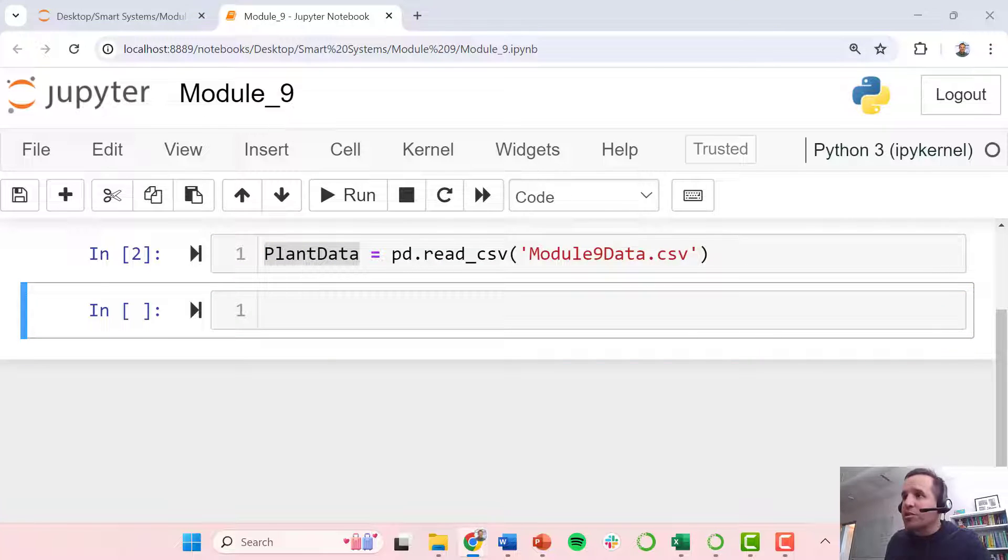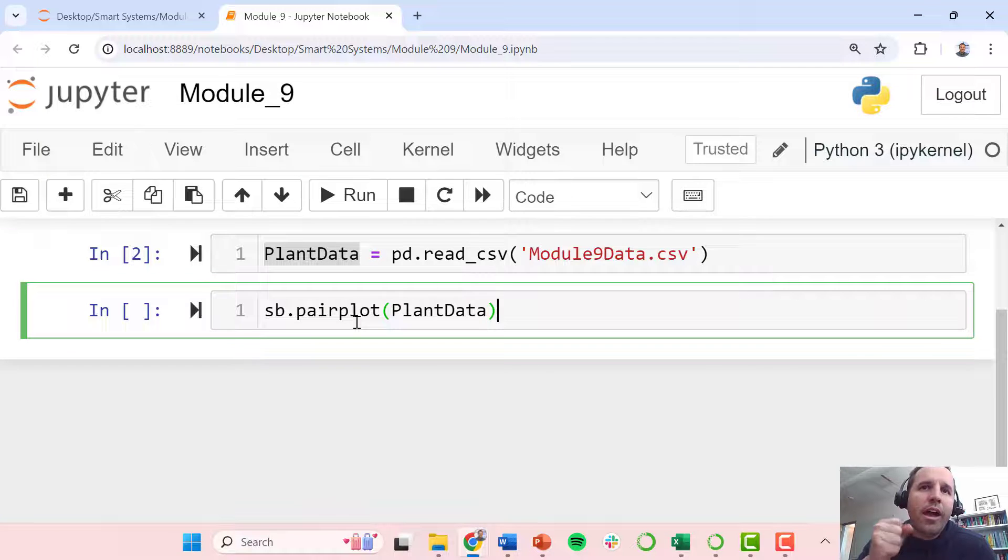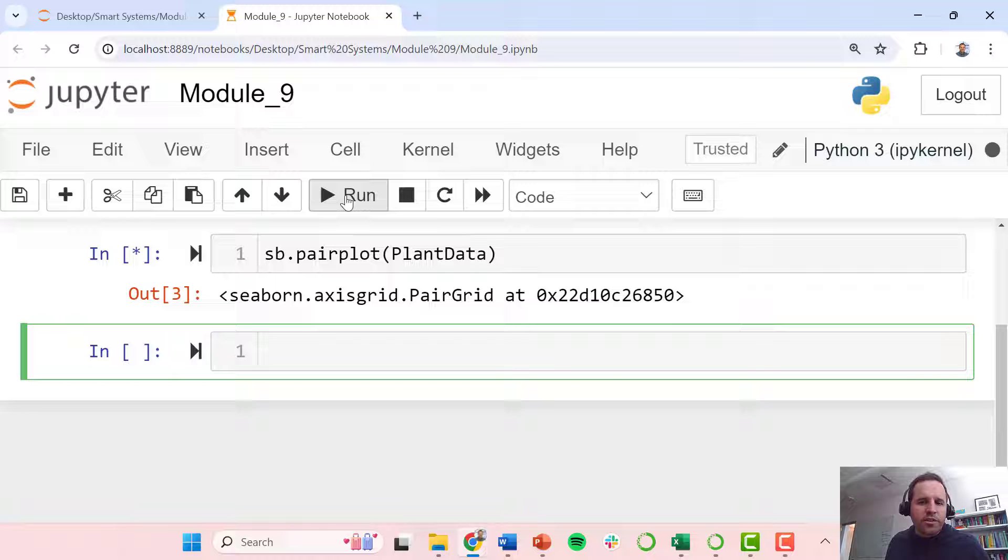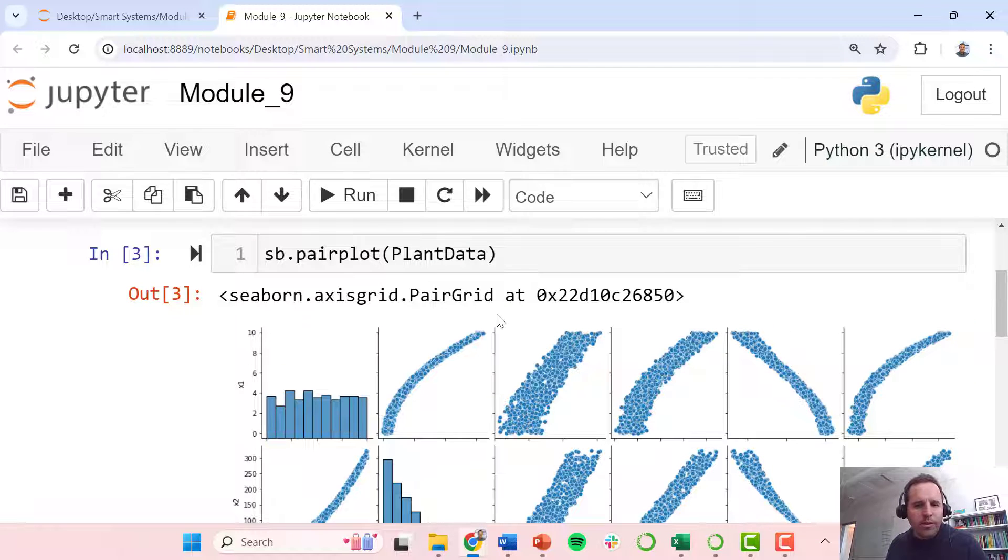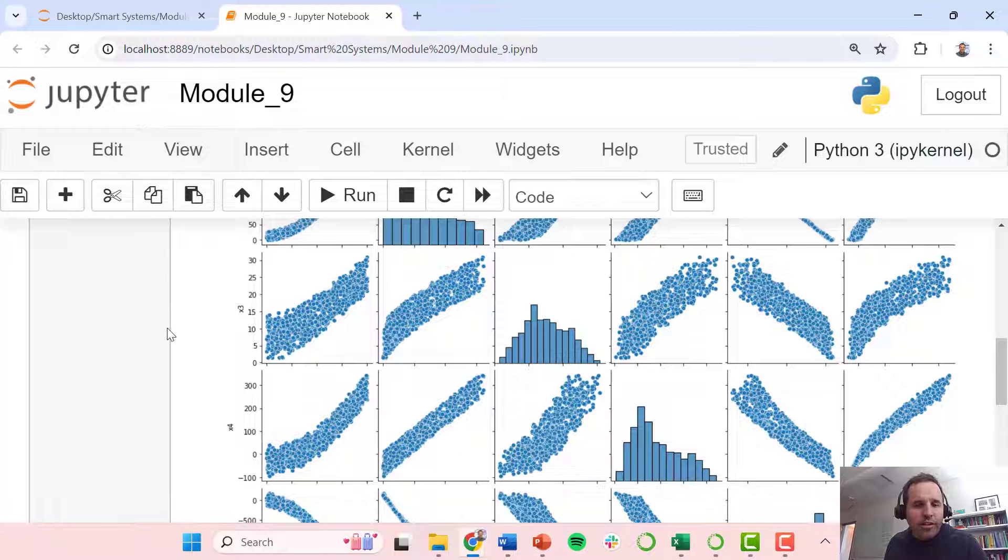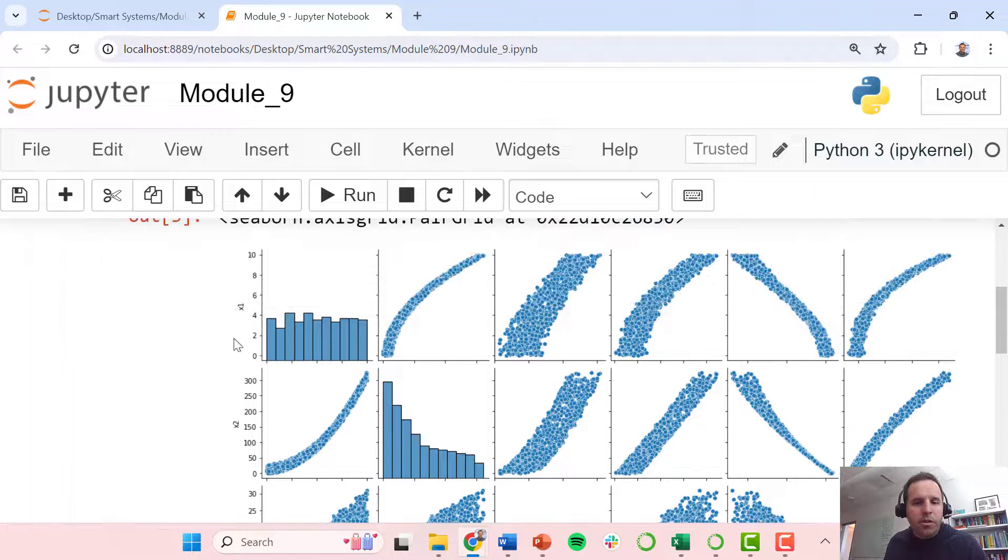And this next command is super simple. Using the Seaborn tool we're going to generate a pair plot of the plant data. And as you recall the plant data had labels on top: X1, X2, X3, X4, Y1 and Y2. Those labels are retained in our pandas data frame and all the way through into our pair plot. So I run this command and I just want to show what this outputs. So the pair plot is a large matrix.